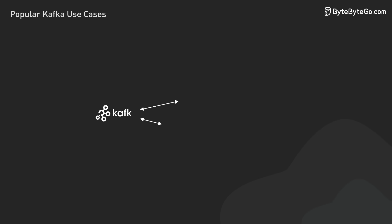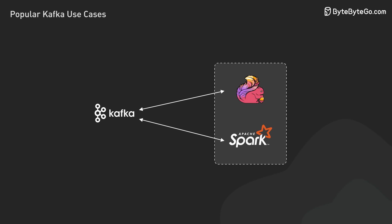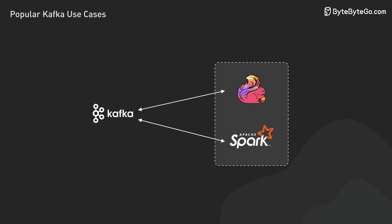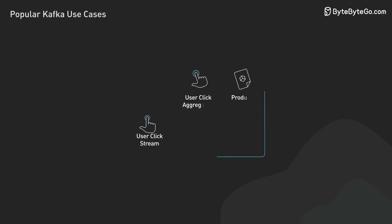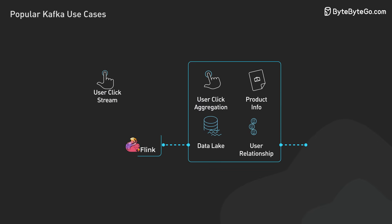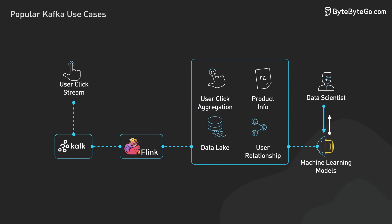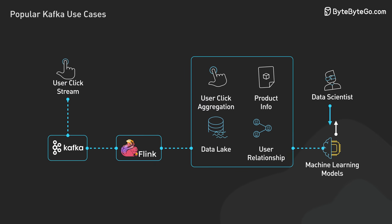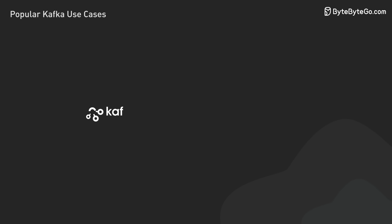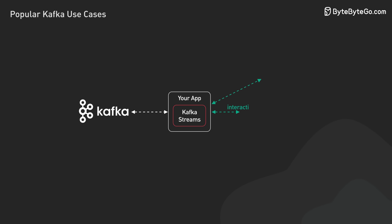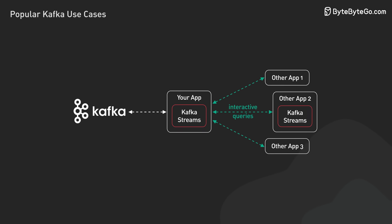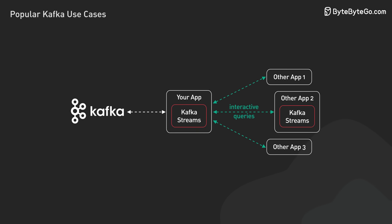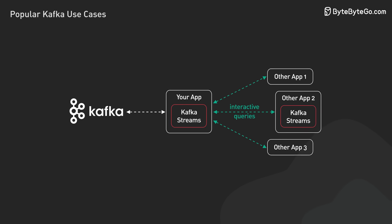Kafka's integration with stream processing frameworks like Apache Flink or Spark Streaming is key here. These tools can read from Kafka, run complex computations or ML inference, and write results back to Kafka, all in real time. It's also worth mentioning Kafka Streams — Kafka's native stream processing library — which allows us to build scalable, fault-tolerant stream processing applications directly on top of Kafka.